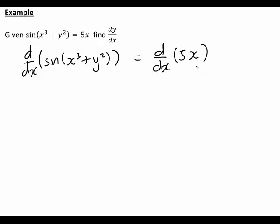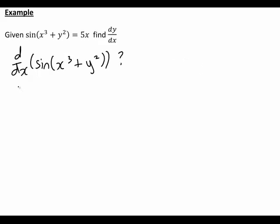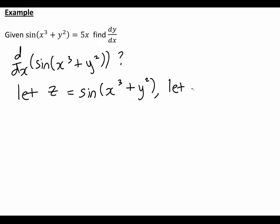I want to focus on the expression on the left-hand side, because that's the more complicated one — that's where we have a function of a function, as we have sin of (x³ + y²). For convenience, let's call sin(x³ + y²) equal to z. In turn, let u equal x³ + y², so that z equals sin(u).